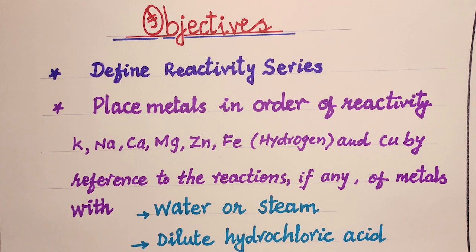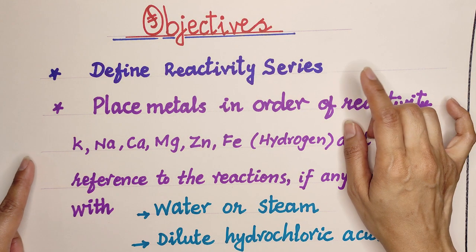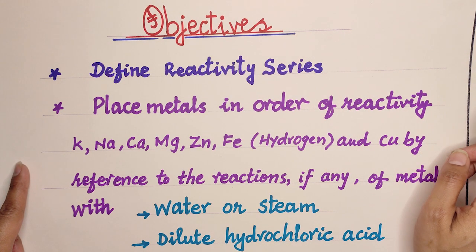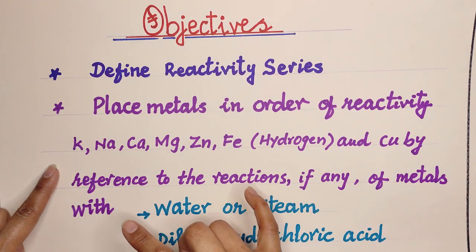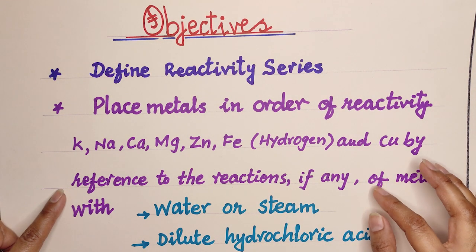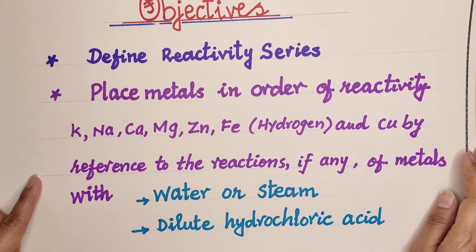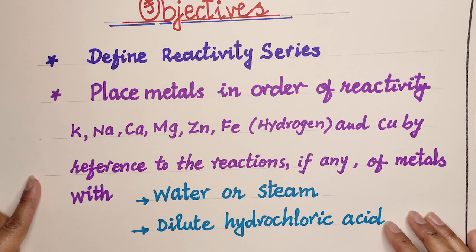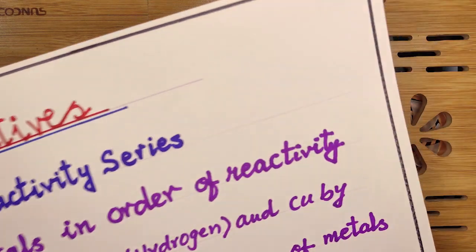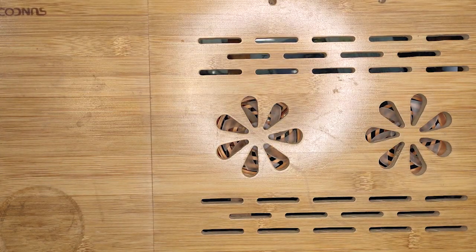In this lesson you will be able to define the reactivity series and place metals in order of reactivity — potassium, sodium, calcium, magnesium, zinc, iron, and copper — by reference to the reactions of metals with water or steam and dilute hydrochloric acid. We will also be able to determine which metals are very reactive and which are not.